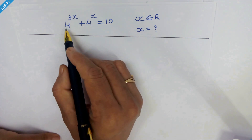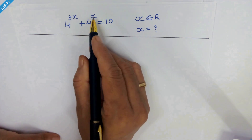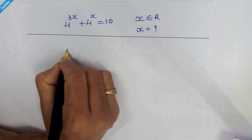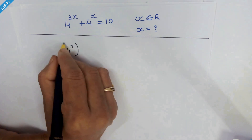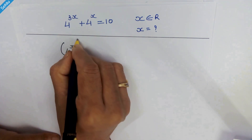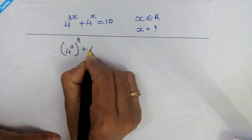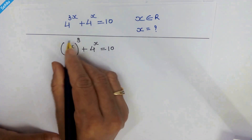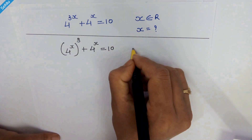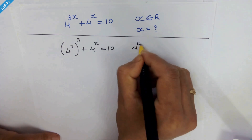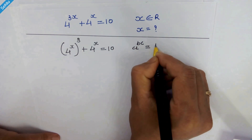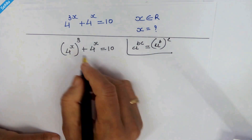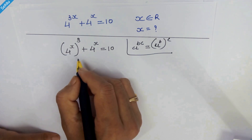Hello friends. Here we have this nice exponential equation and we need to find the real value of x. Let's rewrite this equation as 4 raised to x, whole raised to 3, plus 4 raised to x, is equal to 10. We can write this because if we have a raised to b times c, then it can be written as a raised to b, whole raised to c. Now we need to make it more convenient to operate.